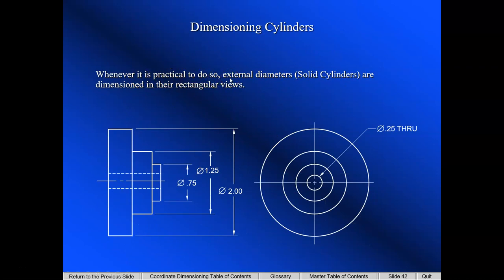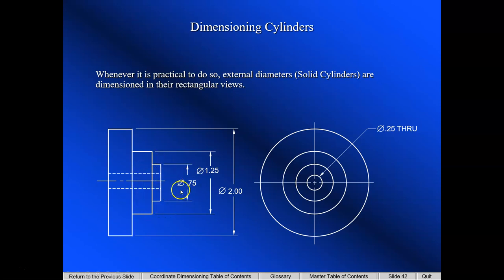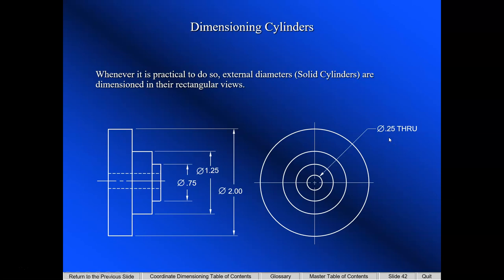Whenever practical, we want to dimension cylinders in their rectangular view. Here we have a front view and left side view of what is basically three stacked cylinders with a hole going through. We should dimension the cylinders in their rectangular view, stacking the dimensions that way. Notice how we shift the dimensions slightly so it's more readable. The hole should be dimensioned in its circular view, which we've done here.